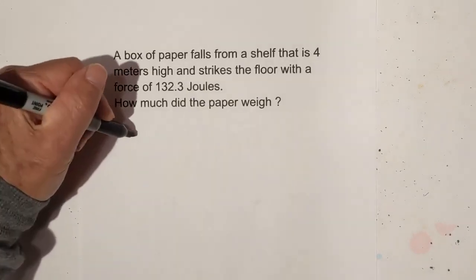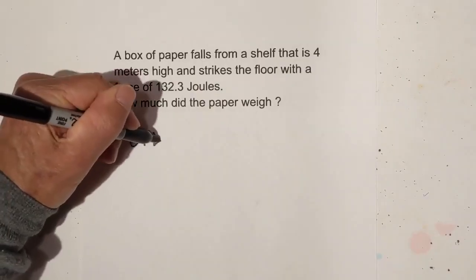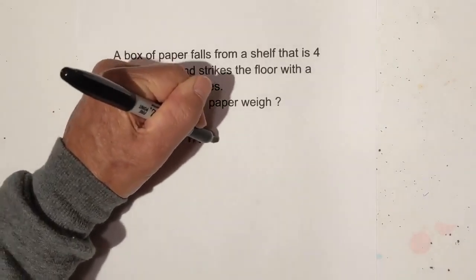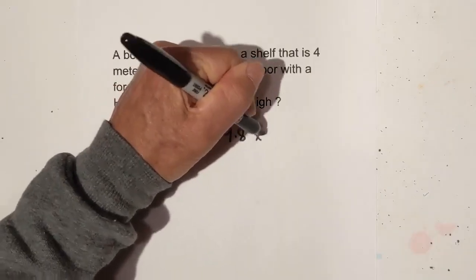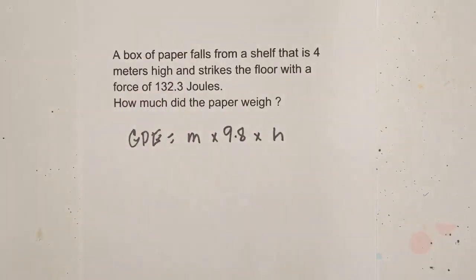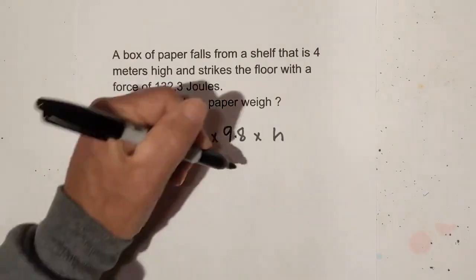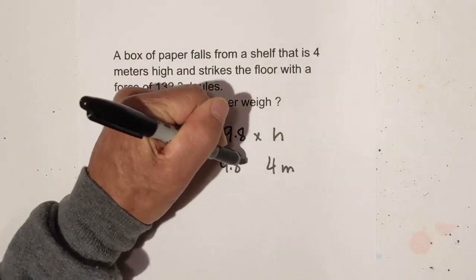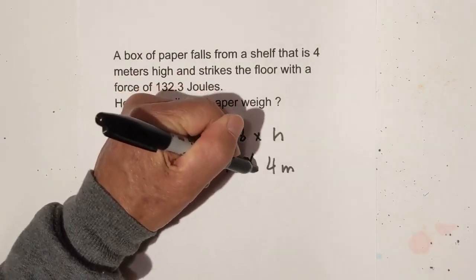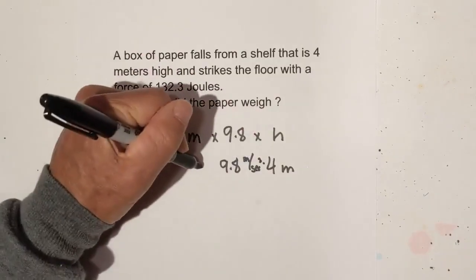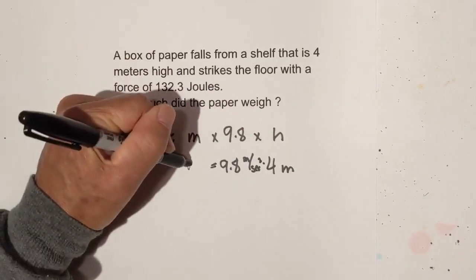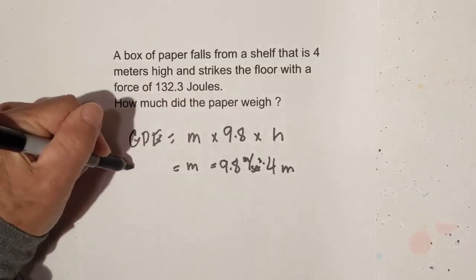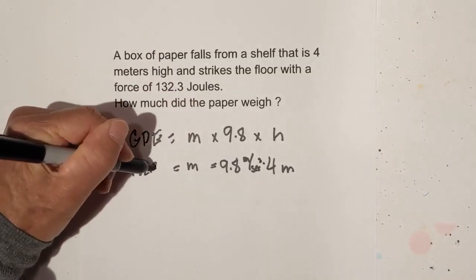Let's go ahead and use our formula. GPE equals mass times 9.8 times the height. We know the height, which is four meters. We know the 9.8 and the units. And we know that this is 132.3.